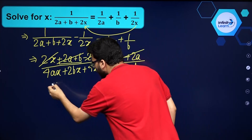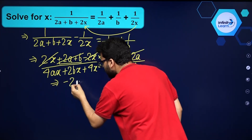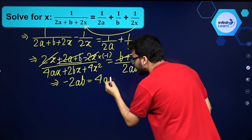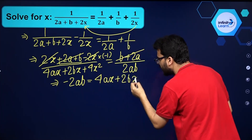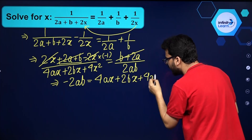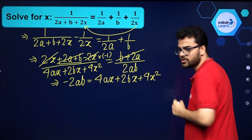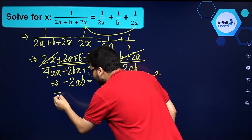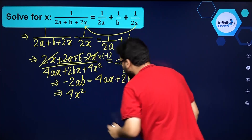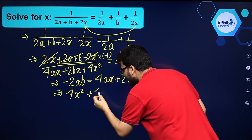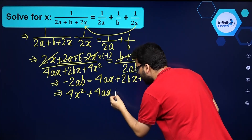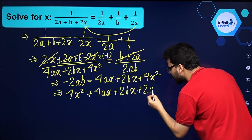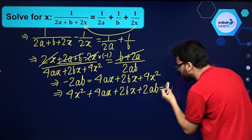Now let's cross multiply. I'll get minus 2ab, and that is equal to 4ax plus 2bx plus 4x squared. Now I can take these things to the other side of the equation and rearrange it properly. So I can write it as 4x squared plus 4ax plus 2bx plus 2ab, and that is equal to 0.